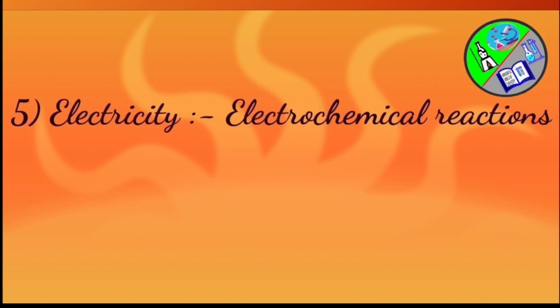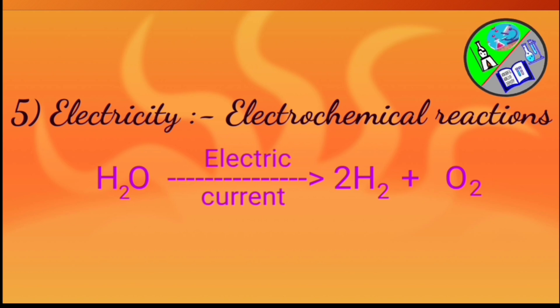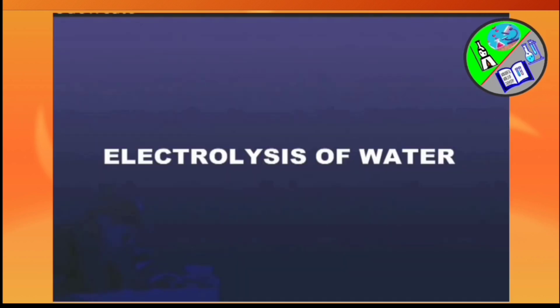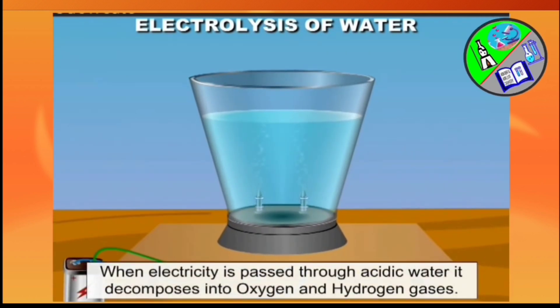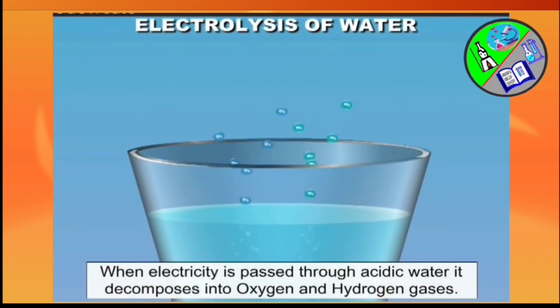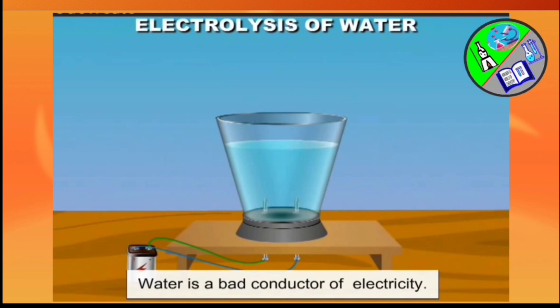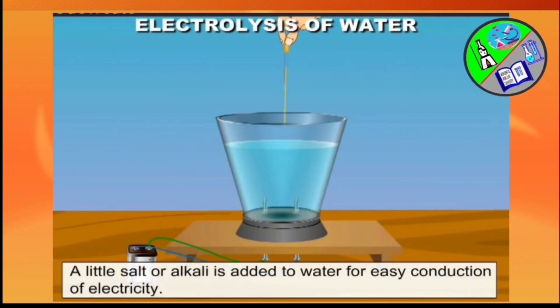Next condition is electricity. Some chemical reactions occur when electricity is passed through it. Such reactions are electrochemical reactions. Let's see how actually electrolysis of water is done. If electricity is used for decomposing a substance, it is called electrolysis. When electricity is passed through acidic water, it decomposes into oxygen and hydrogen gases. As water is a bad conductor of electricity, a little salt is added to water for easy conduction of electricity.